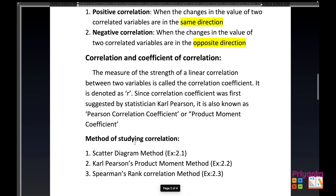The measure of the strength of the linear correlation between two variables is called the coefficient of correlation, denoted as r. Since this was first suggested by statistician Karl Pearson, it is also known as Pearson's coefficient of correlation or product moment coefficient.